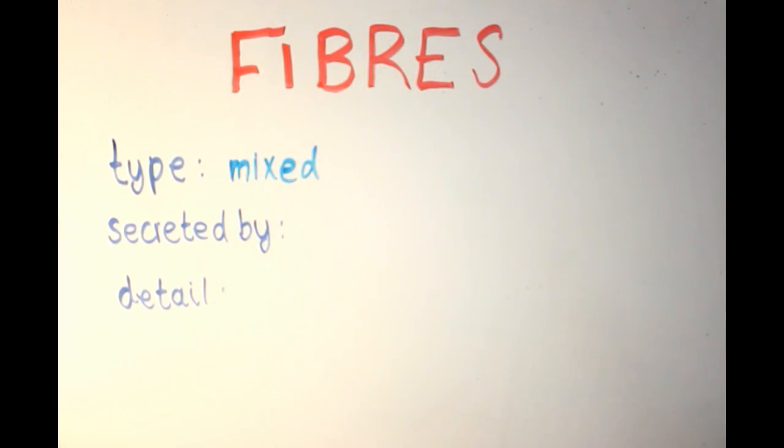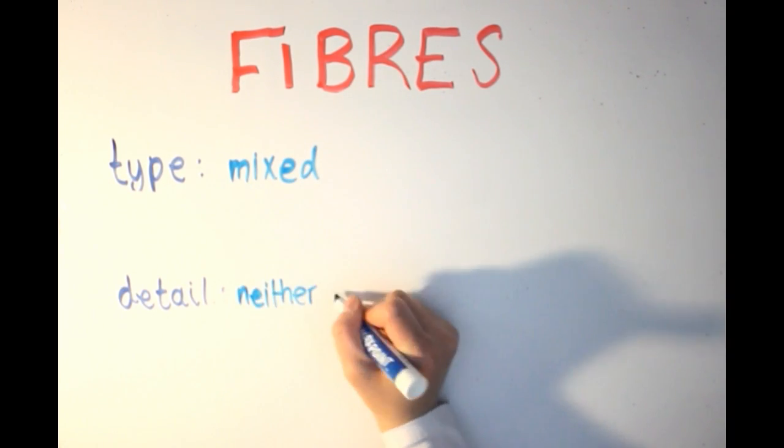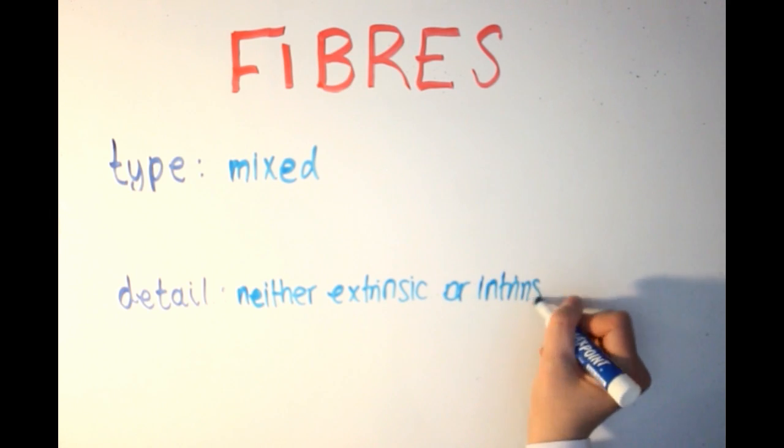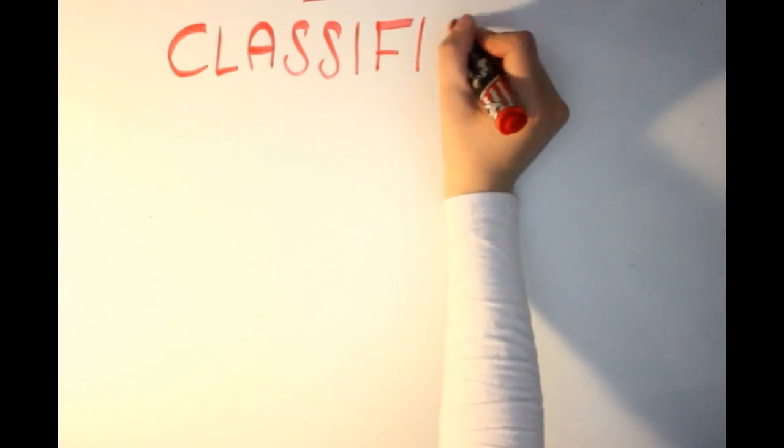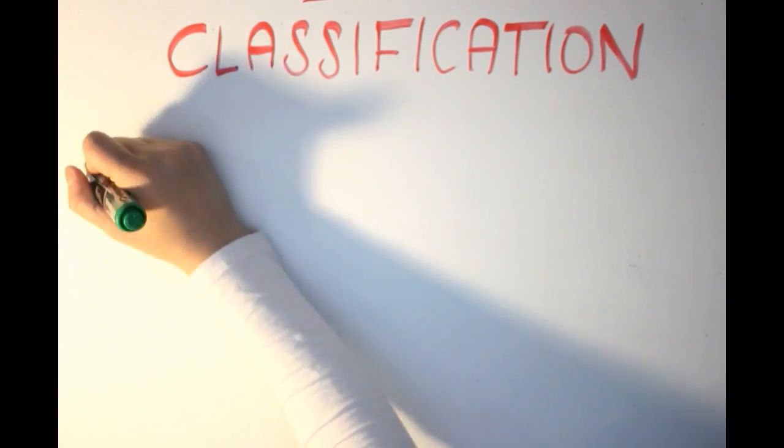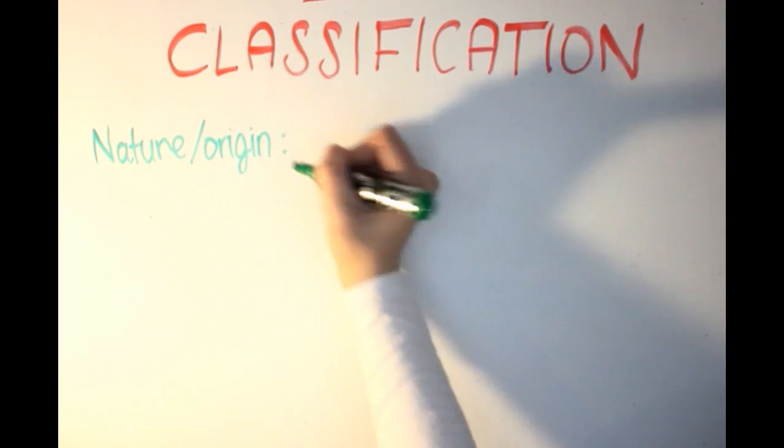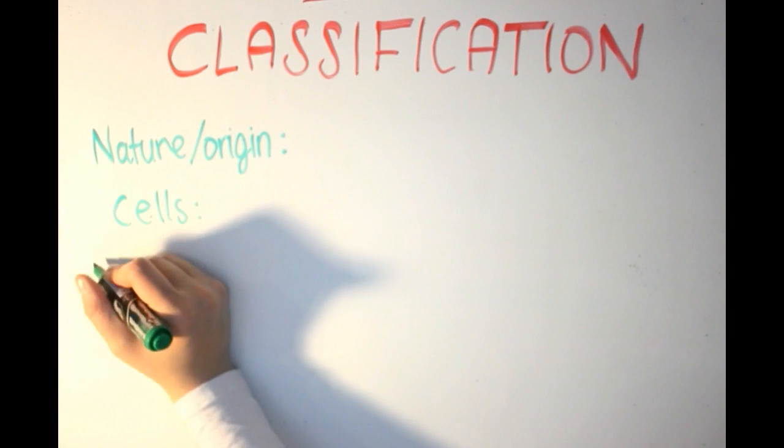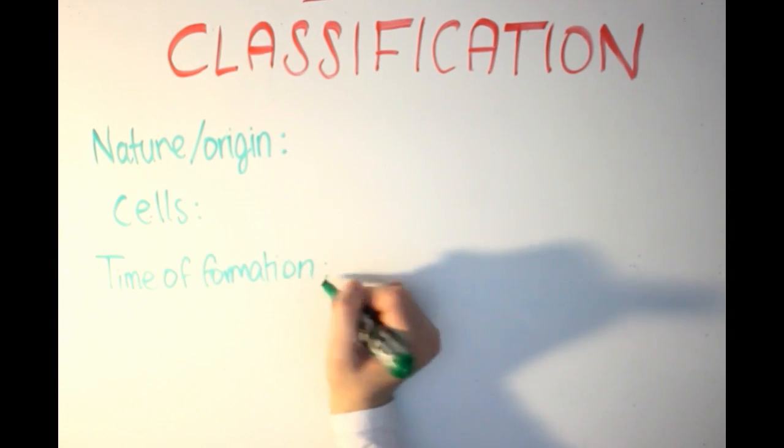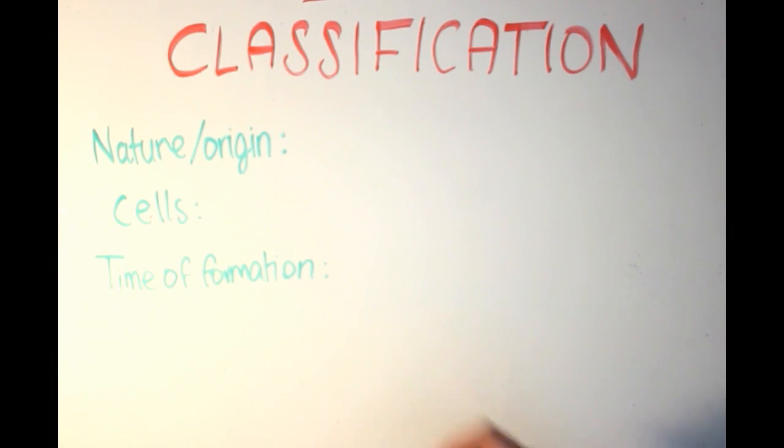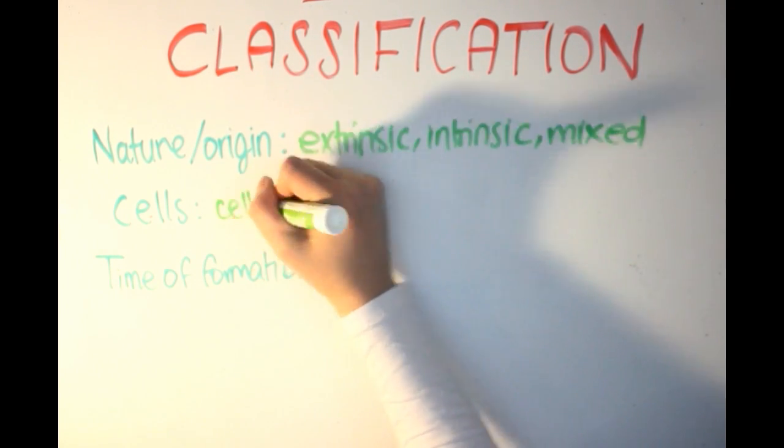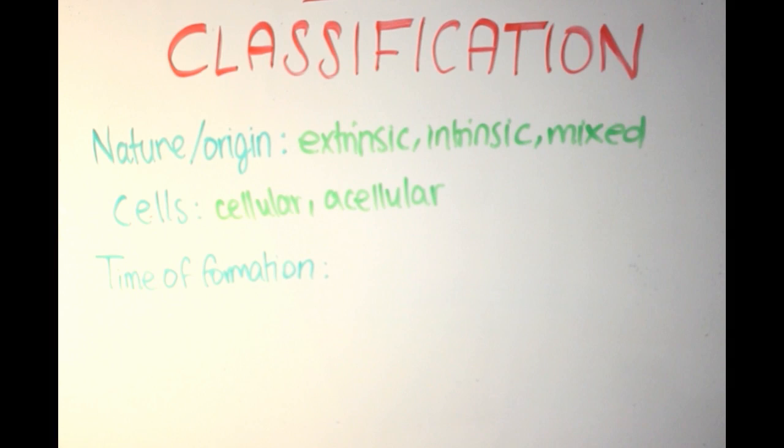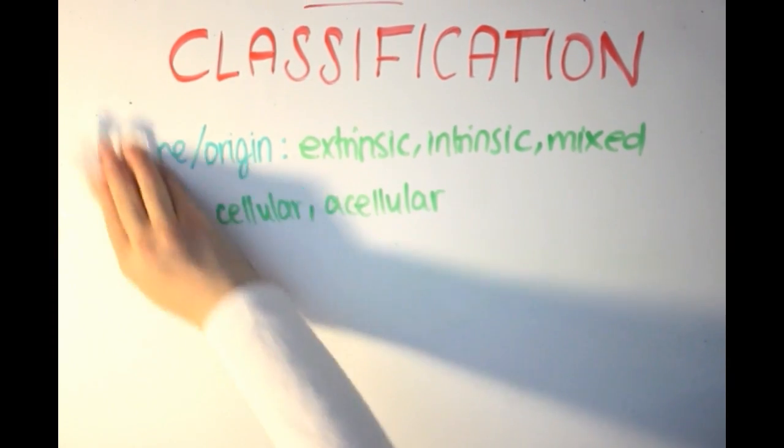Cementum is classified according to: one, the nature and origin of fibers into extrinsic, intrinsic, or mixed; two, the presence or absence of cells into cellular or acellular; and three, the time of formation where cementum is classified as primary, secondary, or reparative.